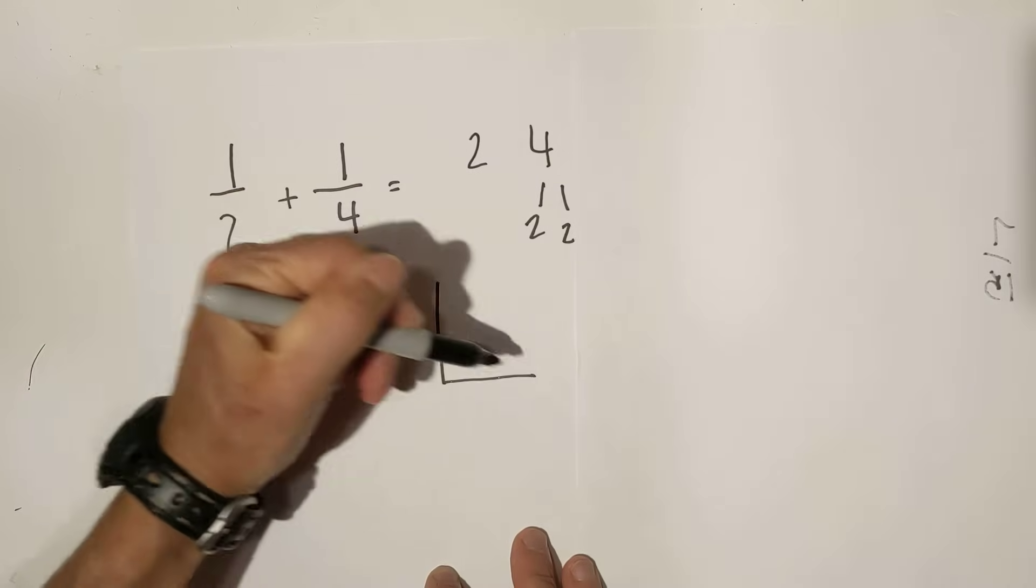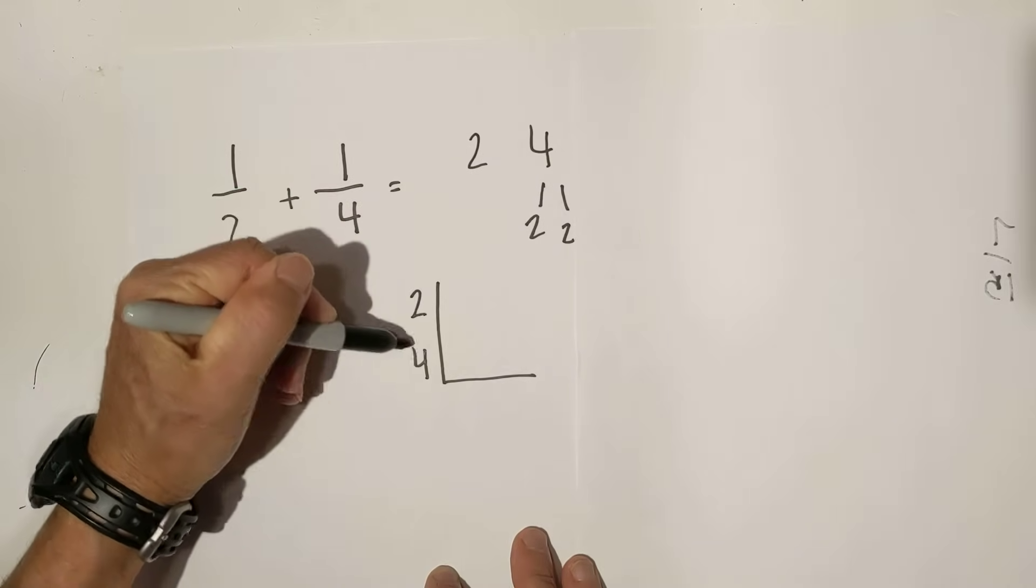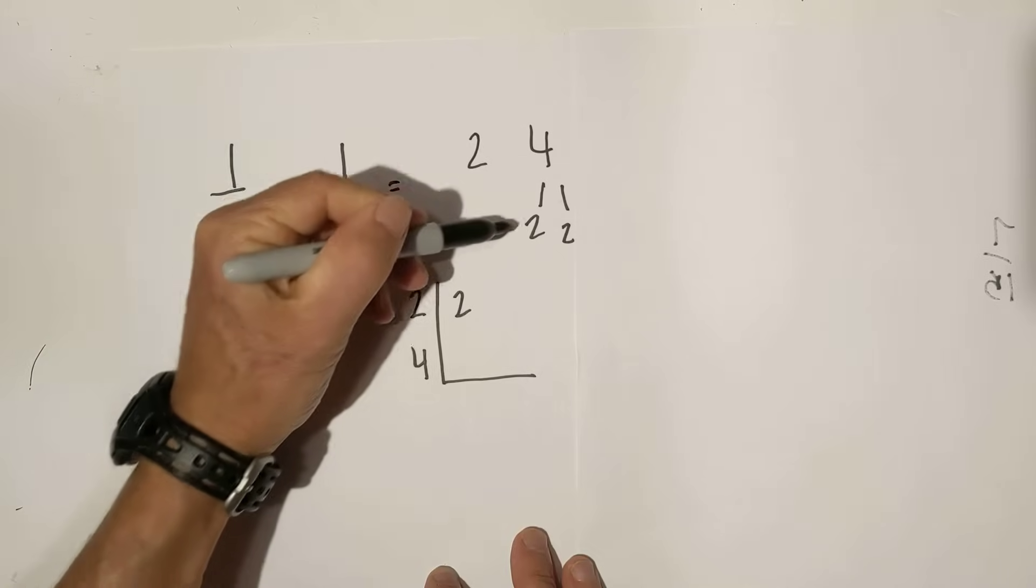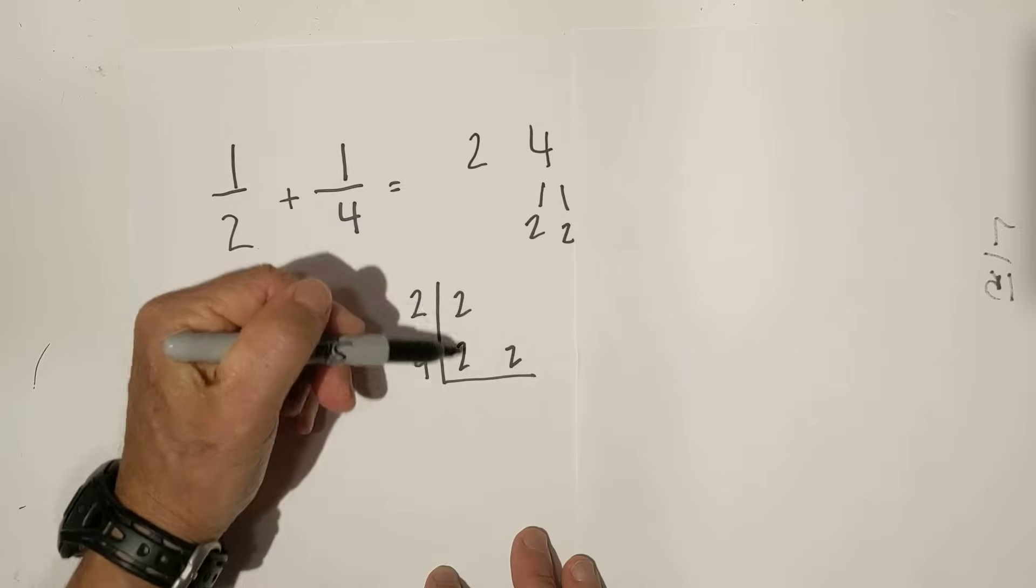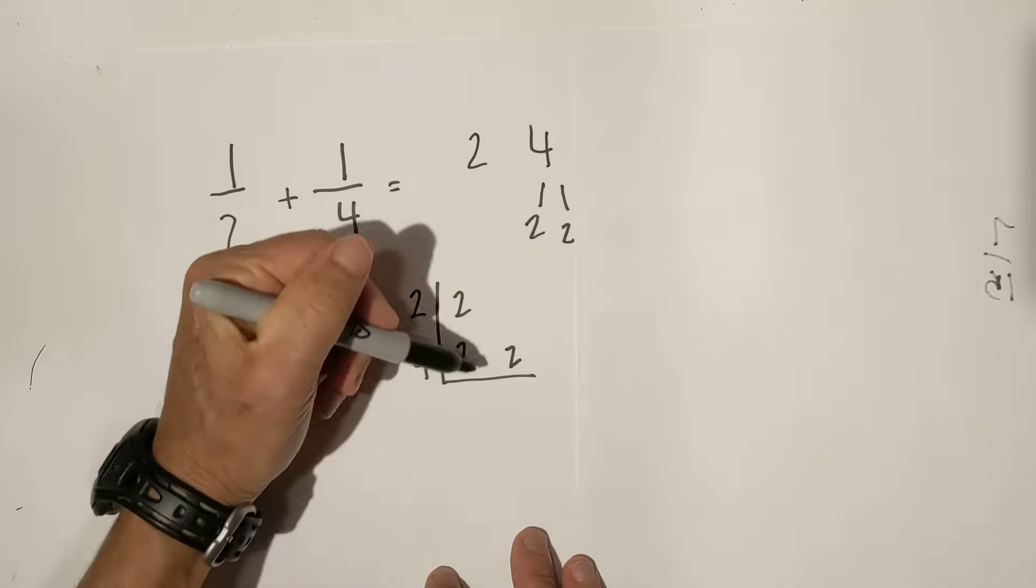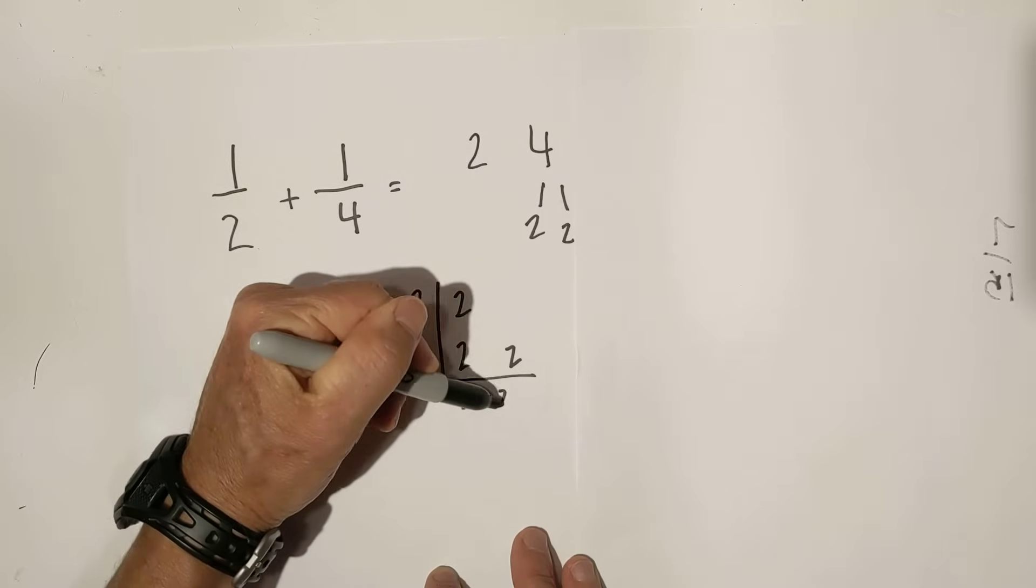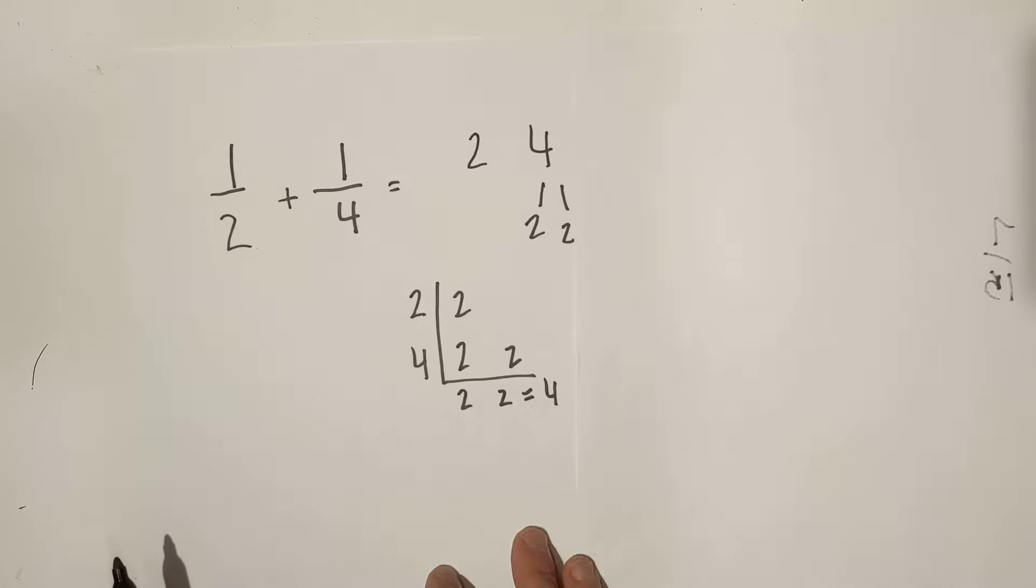Now, I place them in this chart that just organizes everything. So I write a two here, and then I write two and two, and the rule is, if you have more than one number in a column, just bring down one number, and then just multiply these. So now I know the common denominator is four.